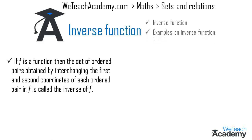If f is a function, then the set of ordered pairs obtained by interchanging the first and second coordinates of each ordered pair in the function f is called the inverse of f, and it is denoted by f inverse.